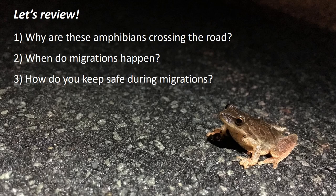So to wrap up, let's review. Why are the amphibians crossing the road? They're crossing because they're moving from their overwintering habitat in the forest to the woodland pools where they need to breed, and their habitat has probably been fragmented by the road. If you see them crossing a road, that's what we call habitat fragmentation, and we're basically trying to mitigate the effects of that fragmentation by helping move them safely.